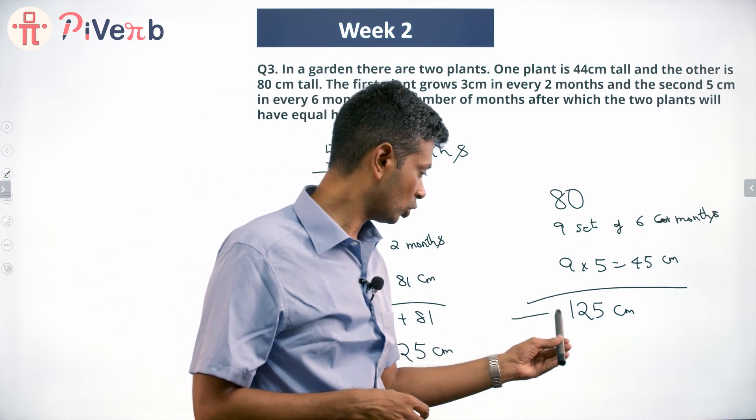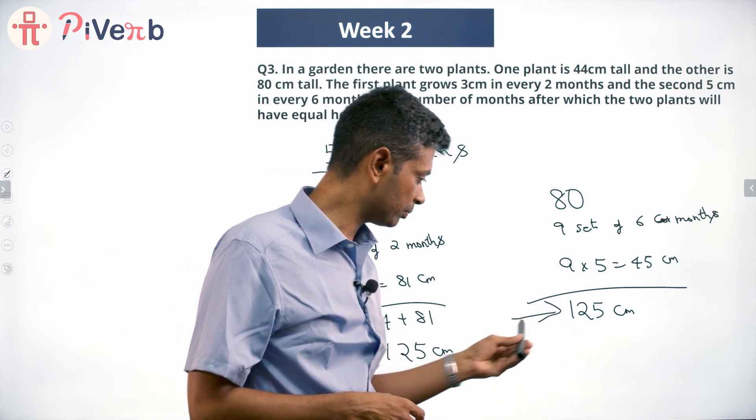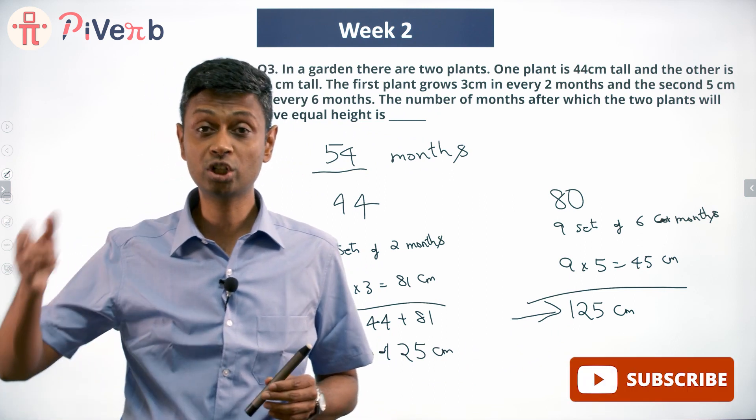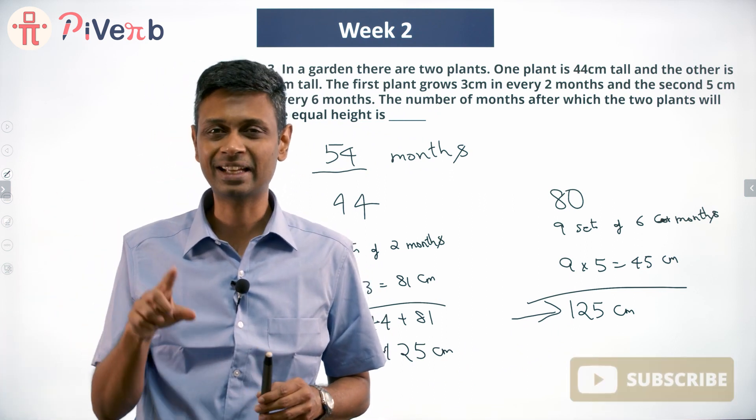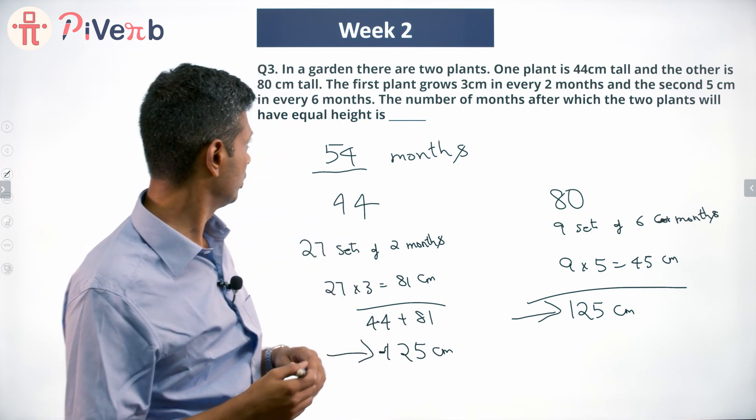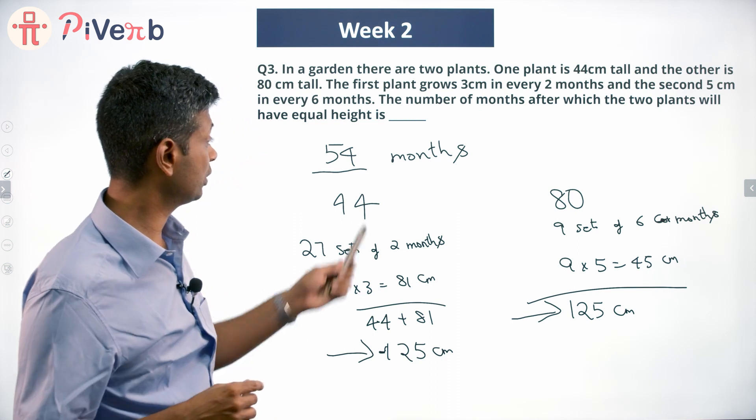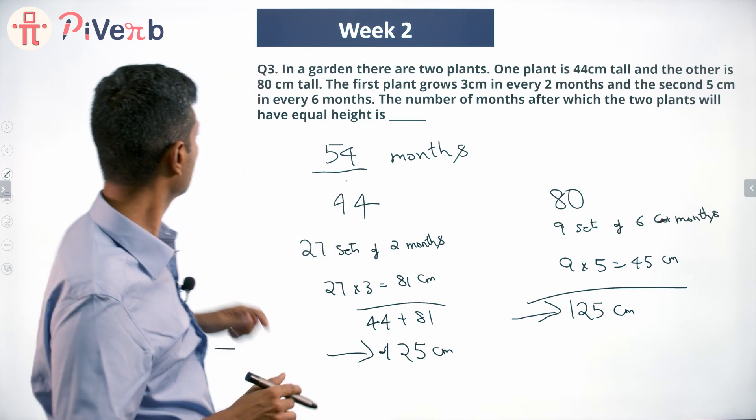At the end of 9 complete cycles, this plant will be 125 centimeters tall, and so will this plant. The difference of 36 centimeters has been caught up by the originally shorter plant in 9 cycles - 9 cycles of 6 months each, or 54 months. The number of months after which the two plants will have equal height is 54 months.